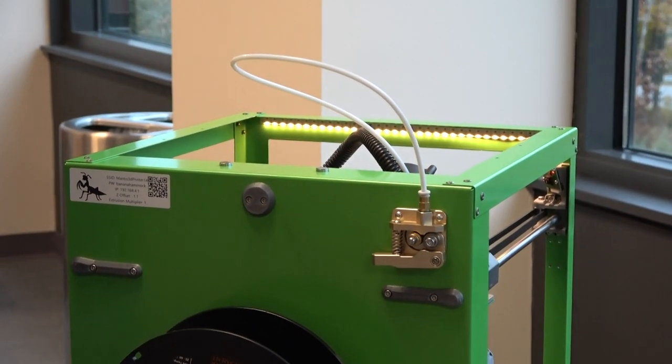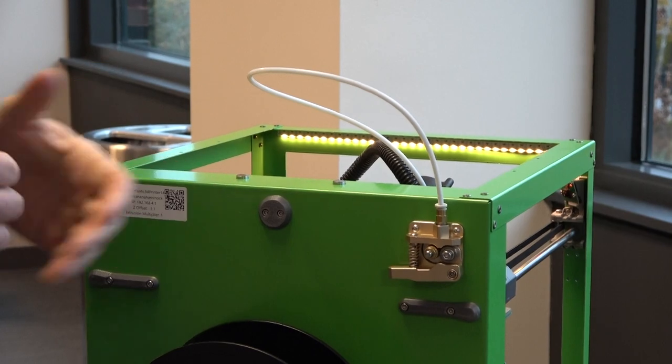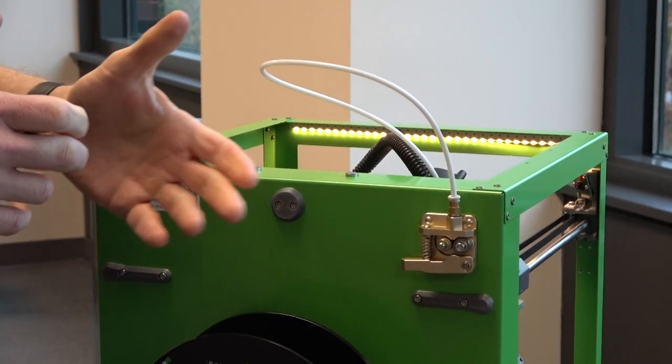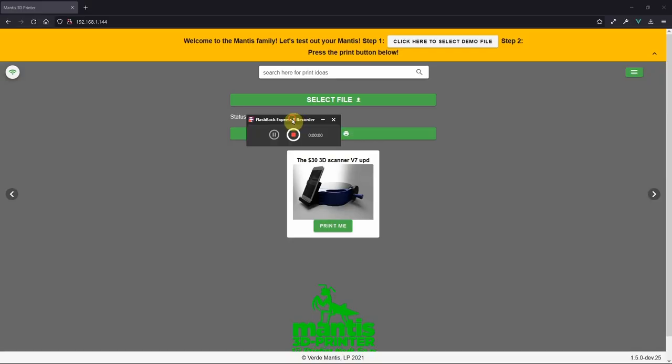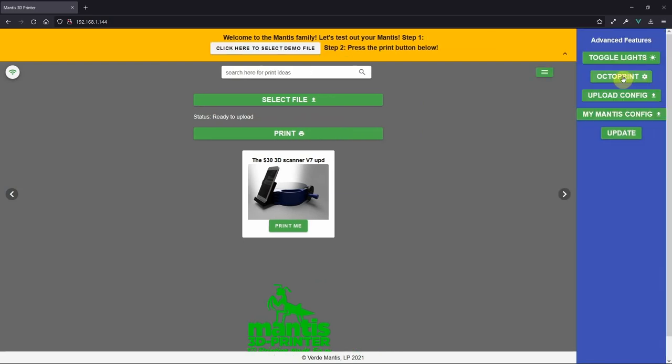In this case, what you're going to want to do is head into OctoPrint. Let's go ahead and take a look at that now. Here we are in the interface. We're going to click on the Advanced Features menu on the right-hand side here, click on OctoPrint.